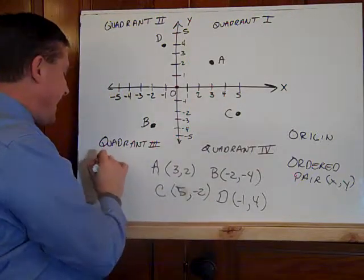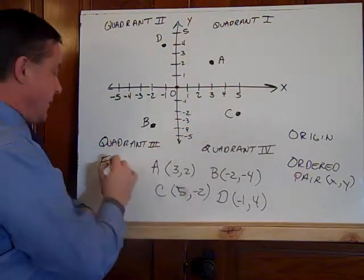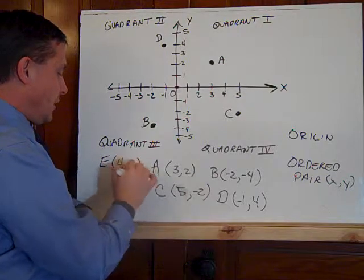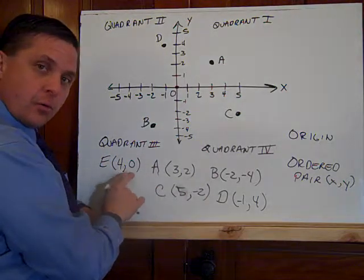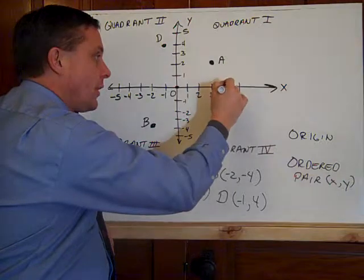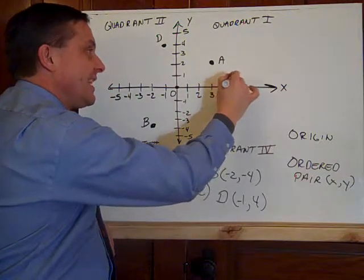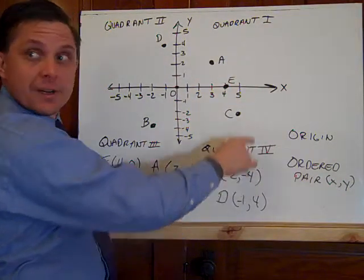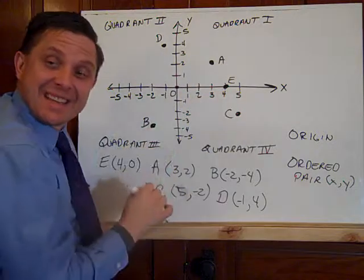Now, if they're on the axes, point E. Let's have it be four, zero. Run to point four, rise zero. Four, rise zero is E. It is not in quadrant four. It is not in quadrant one. It is on the x-axis.